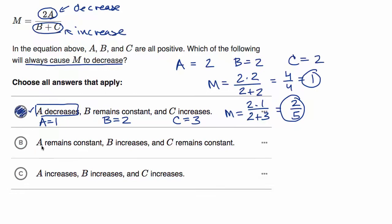Now let's look at choice B. A remains constant, B increases, C remains constant. We could try those choices out again. If A remains constant, A will still be equal to two. B increases, so maybe B goes from two to three. C remains constant, so it would still be equal to two. So M is going to be equal to two times two over three plus two. This is equal to four over five, which is still less than one.